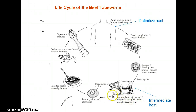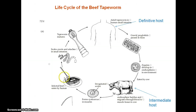The onchosphere hatches into what's called a cysticercus, which is basically embedded in the muscle tissue of the cow. If the cow is butchered for food and the steak is not really cooked very thoroughly, then the cysticercus can still be alive. If a person eats the steak, they're ingesting a cysticercus, which will grow into the adult worm in the intestine — it'll pass down through the stomach, attach to the intestine, and then start to grow its little proglottids in your body.